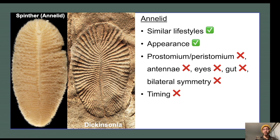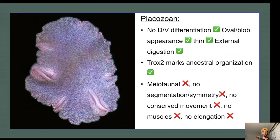I want to examine two possibilities that appear to have the most merit in my opinion: first, that Dickinsonia was a placozoan, and second, that it was a stem bilaterian.